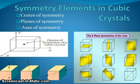Symmetry elements in cubic crystal. I am focusing on cubic crystal. First, center of symmetry, plane of symmetry, and axis of symmetry. You can see here center of symmetry of a cubic crystal. Now, the nine planes of symmetry of the cube. You can see one, two, three, and then diagonal one, two, three. So total nine planes of symmetry of the cube. You can see the axis.